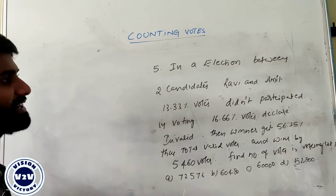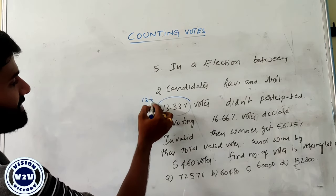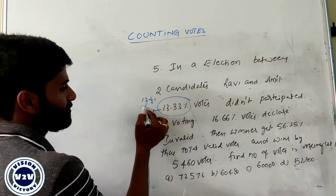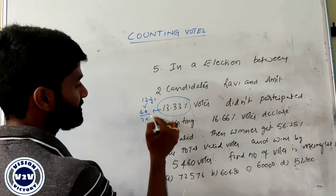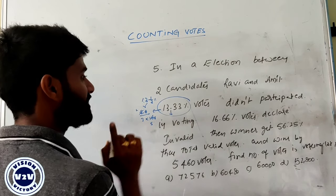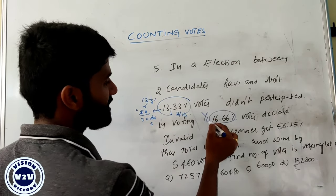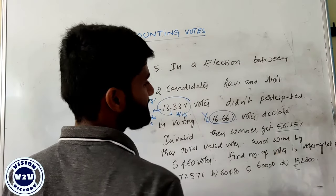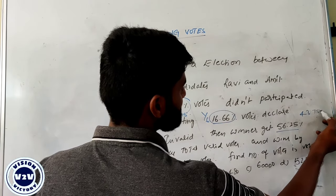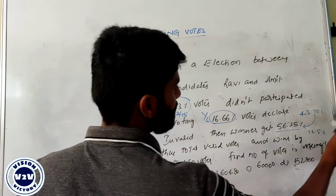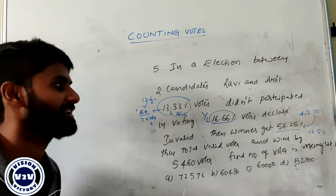In the election between two candidates Ravi and Amit, 13.33 percentage votes did not participate. 13.33 means the value becomes 13 and 1 by 3 percentage, which is 40 by 3 divided by 100, giving 2 by 15. Also 16.66 percentage votes are declared invalid, which becomes 1 by 6. Winner gets 56.25 percentage, loser gets 43.75 percentage, so winner wins by exactly 12.5 percentage. Total winner gets 5,460 votes. Find the number of votes in the voting list.